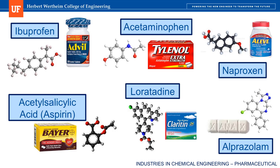Alprazolam is the API in Xanax. What I find fascinating by looking at all these pharmaceutical molecules is that it isn't immediately obvious by looking at the molecules what these medicines are supposed to do. For example, comparing alprazolam and loratadine, they are both complex-looking molecules primarily composed of carbon and hydrogen atoms, with maybe a few nitrogen and oxygen atoms thrown in as well. Why is it that one of them is good at treating severe anxiety and the other is good at treating symptoms of allergies?